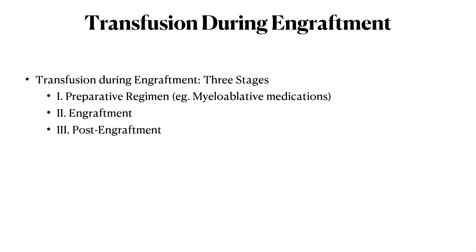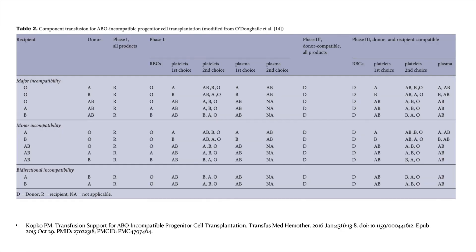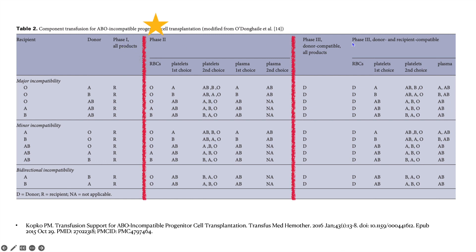Briefly speaking, transfusion during engraftment can be divided into three stages. Part one is the preparative regimen when the patient receives chemotherapy. Part two is engraftment, which isn't a one-day thing — it could last several weeks. And part three is post-engraftment. It's important to distinguish these stages because you can give different transfusion products per stage. Here is a diagram from Dr. Copco — it's an excellent, freely accessible article I would recommend reading — showing phase one and phase three.